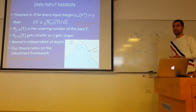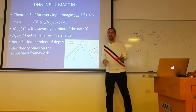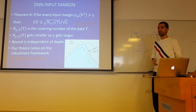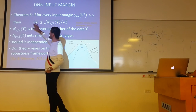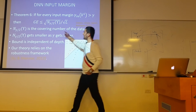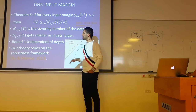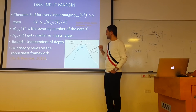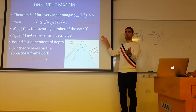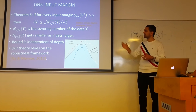Our bound shows that the generalization error is bounded by the square root of the covering number of the input data with balls of size gamma over 2, where gamma is the input margin, divided by the square root of the number of training samples. The larger the input margin we have, the bigger the balls we are allowed to cover the data, and therefore the smaller the covering number, causing the generalization error to be small. Our theory relies on the robustness framework.